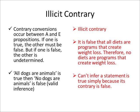The first one is illicit contrary. Remember, on the top of your square of opposition, you have A and E propositions, and those are contraries. So if one is true — if A is true — then the other must be false; E must be false. But if A is false, we don't know what E is, because they can both be false, but they can't both be true. So if I say 'all dogs are animals' is true, then I can infer, based on this contrary relationship, that 'no dogs are animals' must be false, because they can't both be true. So that's a valid inference based on the contrary relation.